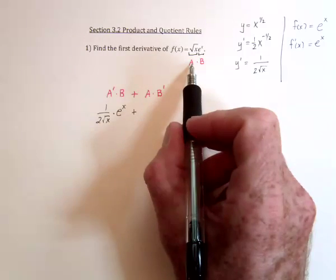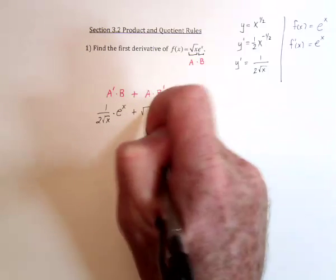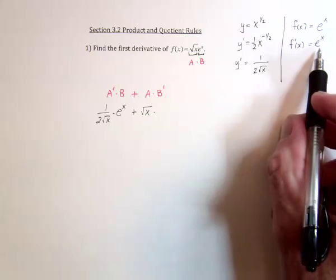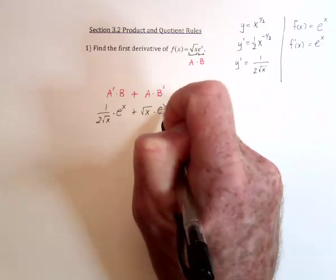Next, leave the first function alone, the square root of x, and now take the derivative of the second function, which we did over there, that's e to the x for the derivative.